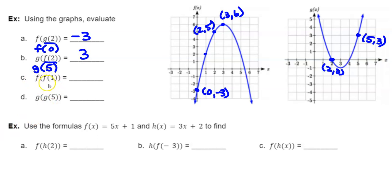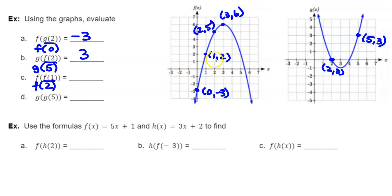For f of f of 1, go on the inside — when x equals 1 on the f function, the point is 1,2. So f of 1 equals 2. Now I take that 2 and put it into the outside f function. When x equals 2 on the f function, the matching y value is 5. Therefore, f of f of 1 equals 5.